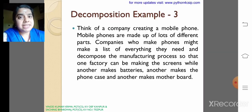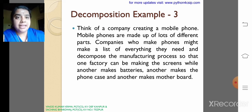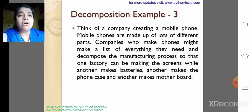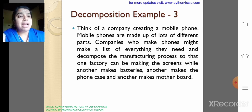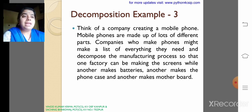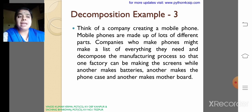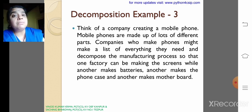Here is a creative and critical thinking case study: think of a company creating a mobile phone. Mobile phones are made up of many different parts. Companies that make phones decompose the manufacturing process so that one factory makes the screens, another makes the batteries, another makes the phone keys, and another makes the motherboard. This is where decomposition happens.